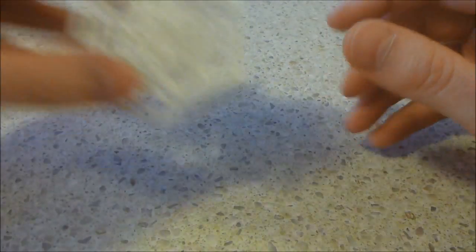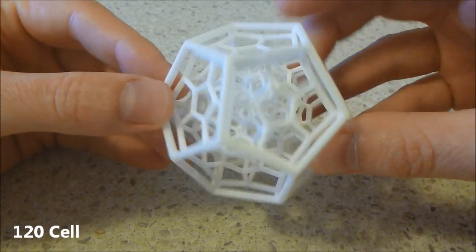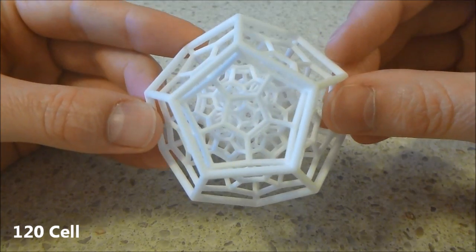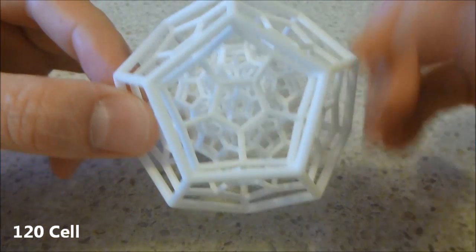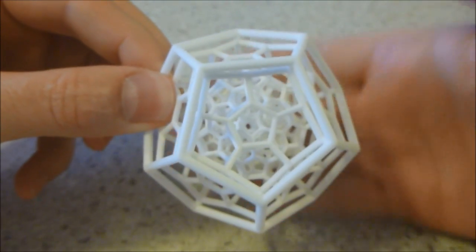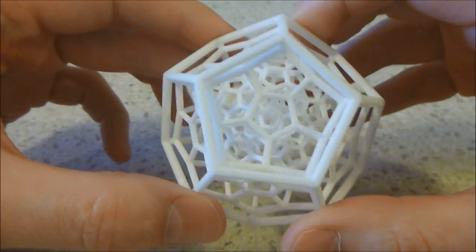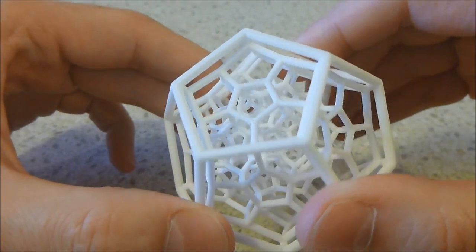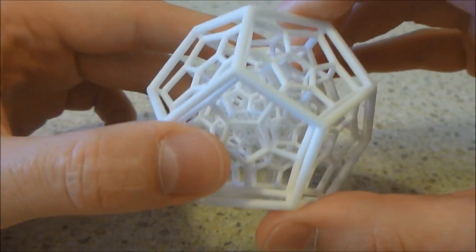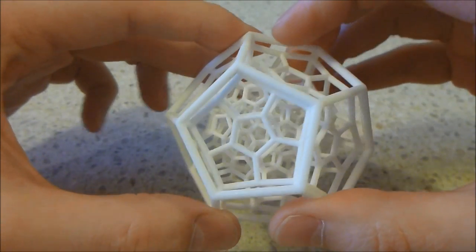Next up we have this mathematical object called a 120 cell. And you can actually see straight through the middle there on any face you choose. Incredibly complex, but structured and ordered object just printed in the white plastic option here.